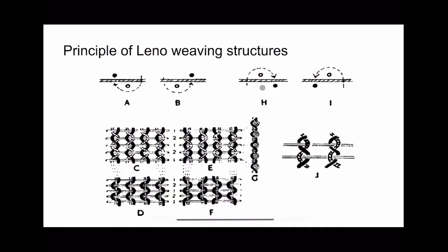There may be two possibilities: either the standard yarn forms the top shed, or the crossing yarn forms the top shed. In the first scenario, if the crossing yarn forms the top shed, then the crossing yarn crosses the standard yarn from below — from beneath it — and forms the top shed in the next pick also.